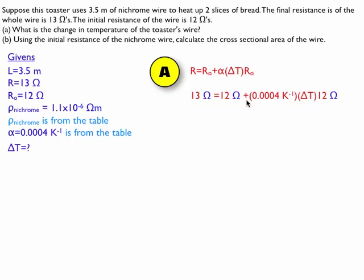Plug in my numbers, I've got the final resistance, 13 ohms is equal to 12 ohms plus the temperature coefficient times the change in temperature times 12 ohms. Solve it for the change in temperature, and that tells me we get a rise of 208 Kelvin.